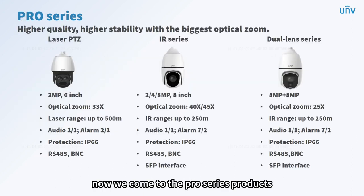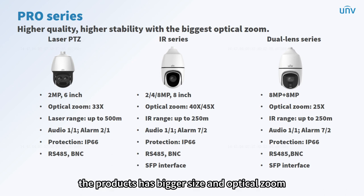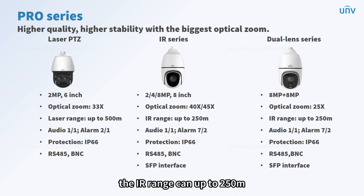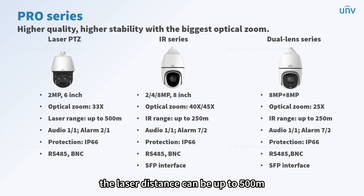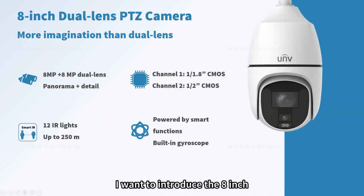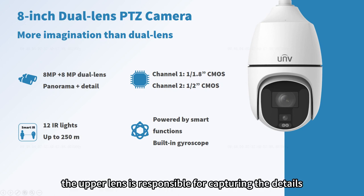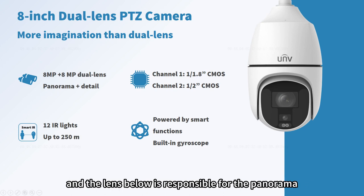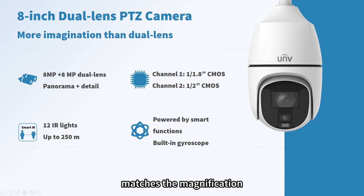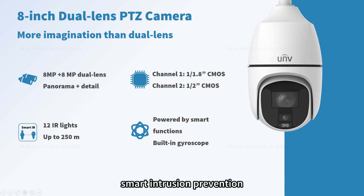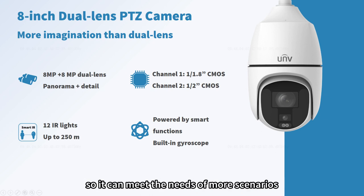Now we come to the Pro Series products. In this series, products have bigger size, larger optical zoom, and many more interfaces than the Prime Series. The IR range can be up to 250 meters, and in addition to infrared models, there is a laser PTZ with a laser distance up to 500 meters. This series is designed specifically for projects. I'd like to introduce the 8-inch dual-lens PTZ camera: both lenses are 8 megapixel — the upper lens captures details and the lower lens handles the panorama. The big CMOS sensor with 8MP and 12 IR lights means that even in the evening it can offer clear images. It is powered by multiple smart functions including smart intrusion prevention, mixed traffic detection, and auto-tracking.